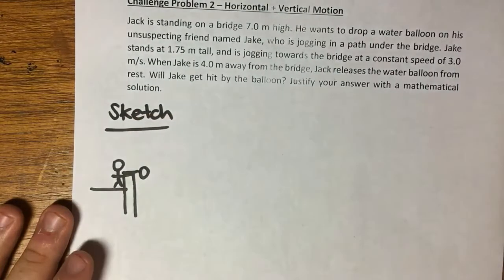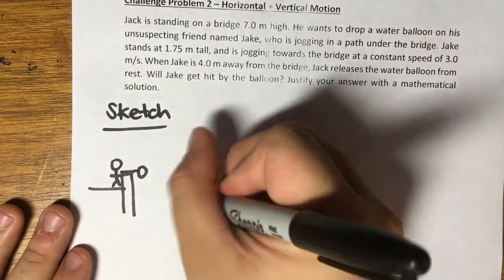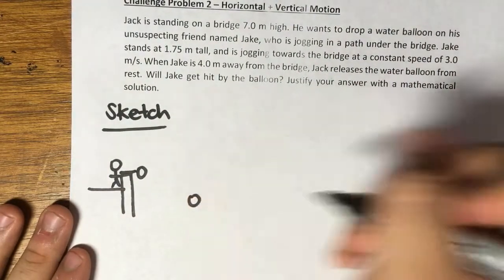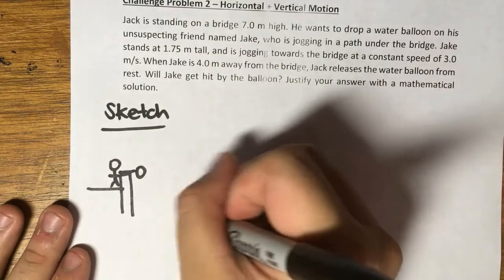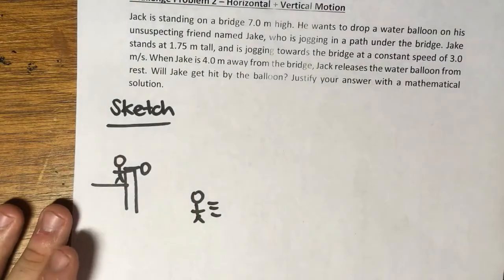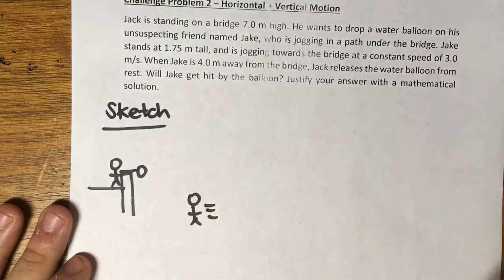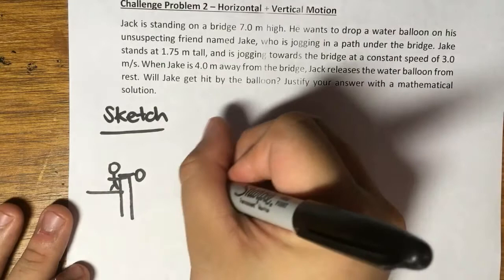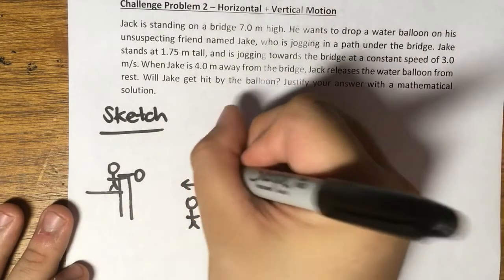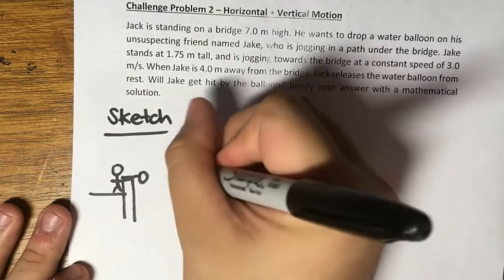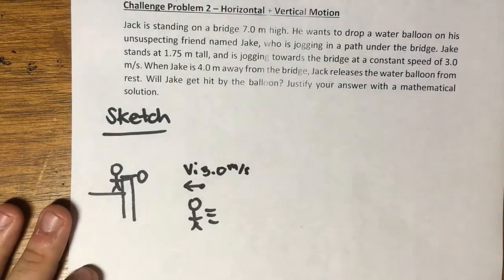Side view of the bridge. Let's say that Jack is on top of the bridge and he wants to drop this water balloon on his unsuspecting friend who is jogging at the bottom. We know that the friend at the bottom whose name is Jake is moving and jogging at a constant speed of 3 meters per second.